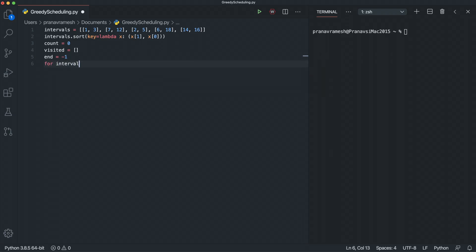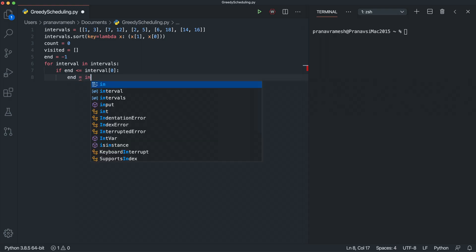So we can say for interval in intervals. And we want to check if end is less than or equal to interval[0]. And the reason we do this is so that we know that if this is true, then we have finished an event and we're ready to move on to the next event. And if we are ready to move on to the next event, we update end, indicating that we're currently in a new event. So end = interval[1]. That'll be our new stop time. And then we want to increment count by 1 because we've been able to attend a new event, count += 1.